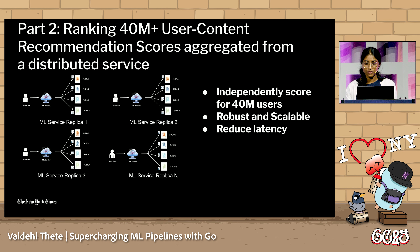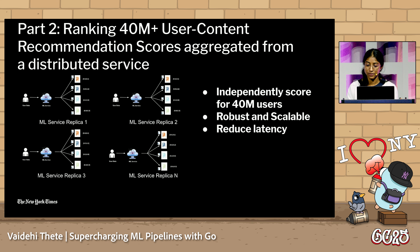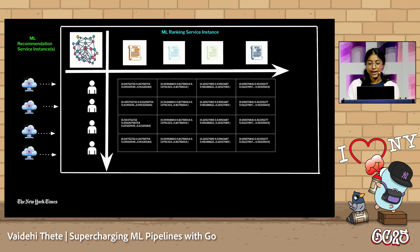It turns out there is a second part to the solution. In order to generate our 40 million user content recommendations independently, we deploy multiple replicas of our recommendation services across different servers. This way, we are not bottlenecked in terms of compute and memory resources, allowing us to unlock low latency by scaling up our performance. This allows us to keep pace with an ever-changing news cycle, helping the newsroom send emails to relevant cohorts quickly.